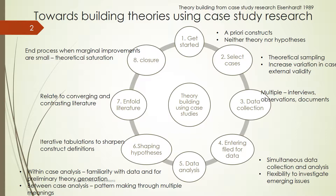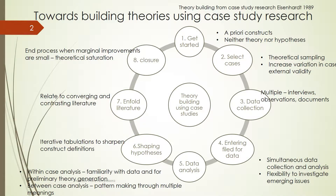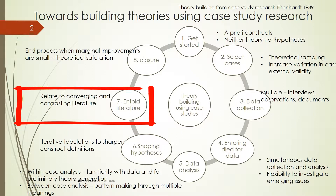The sixth step is shaping hypotheses that are informed by the data analysis. This requires several iterations of tabulating the pattern, which can be examined in relation to the literature — those literature that are supporting and those literature that are against the findings.